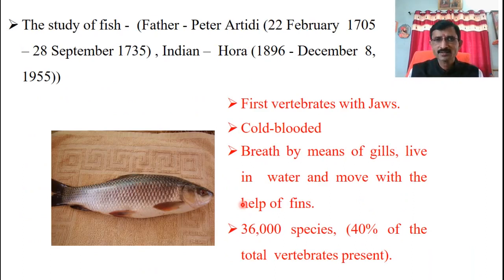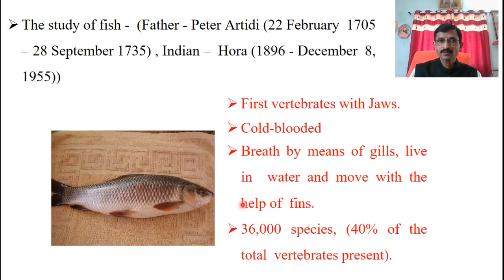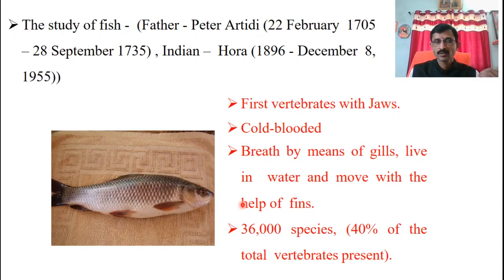Some scientists studied first how fish can be identified. In 1705, the scientist Peter, and one scientist from India, that is Hora, born 8 December 1896, they observed and found information about the identification of fish. Then some points about fish.